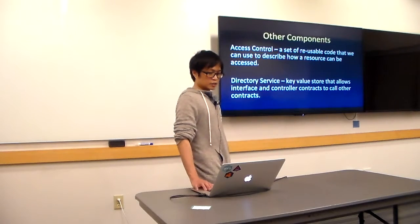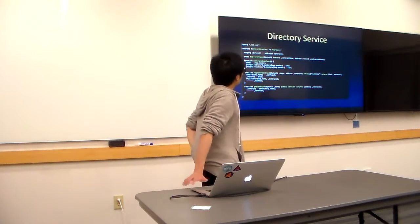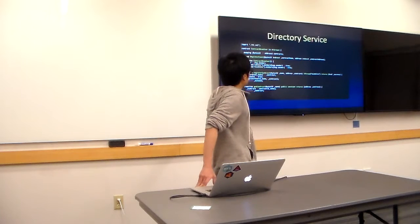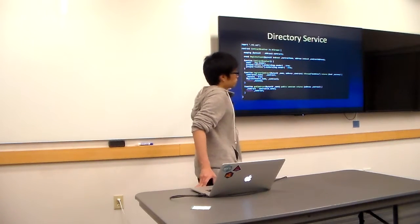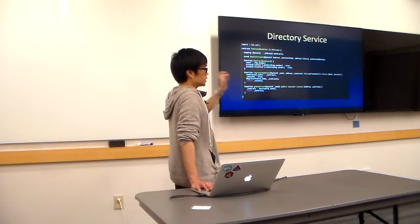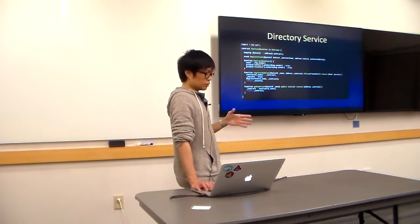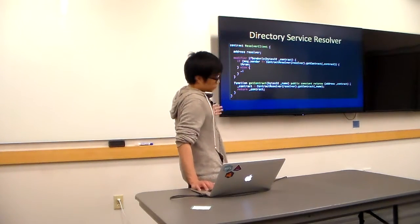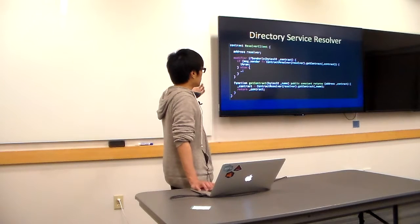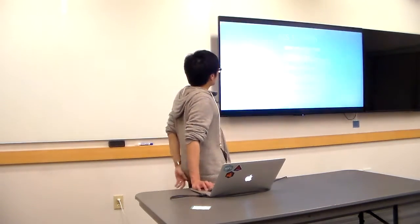The last component is the directory service — a simple resolver. It's a self-contained contract with a mapping of byte-based keys to addresses, and a Boolean value indicating group membership. So a contract with a given key resides at a given address. This allows us to swap out different components. The resolver client is inherited by all other contracts and has modifiers and a function that can retrieve a contract address from the resolver.